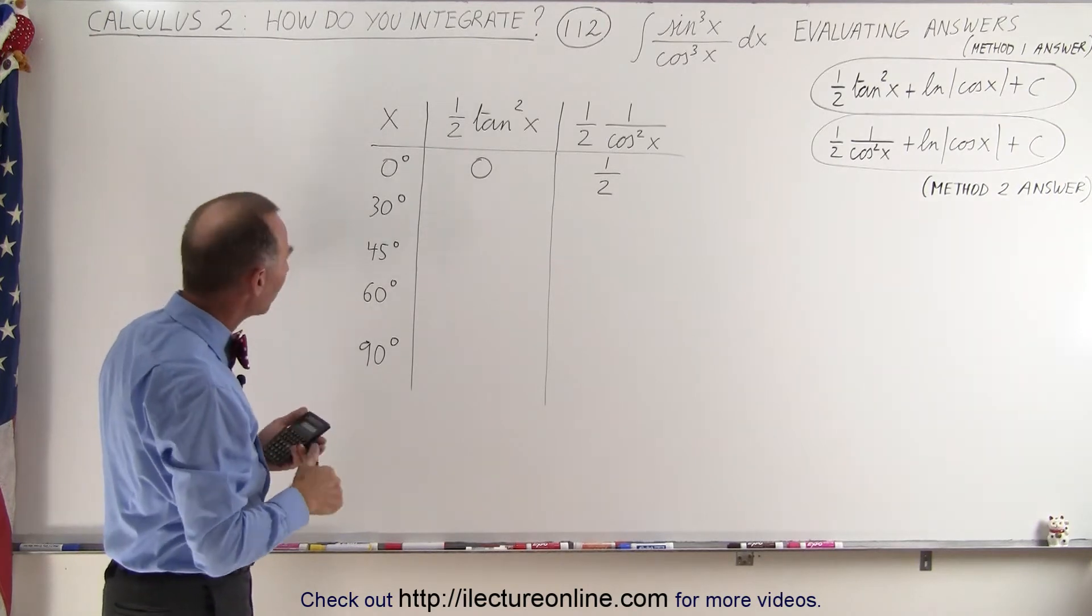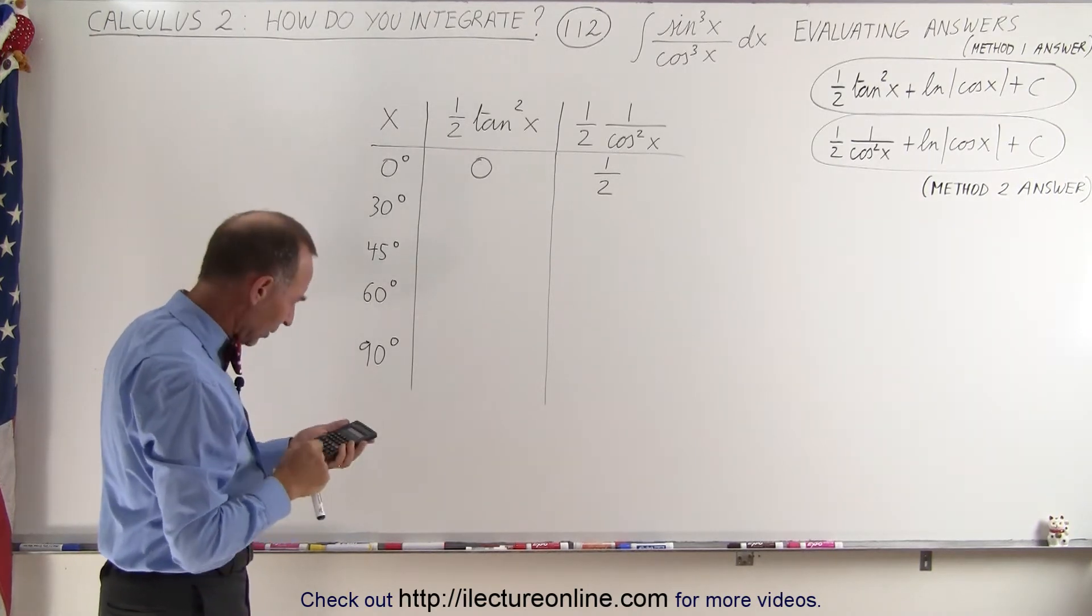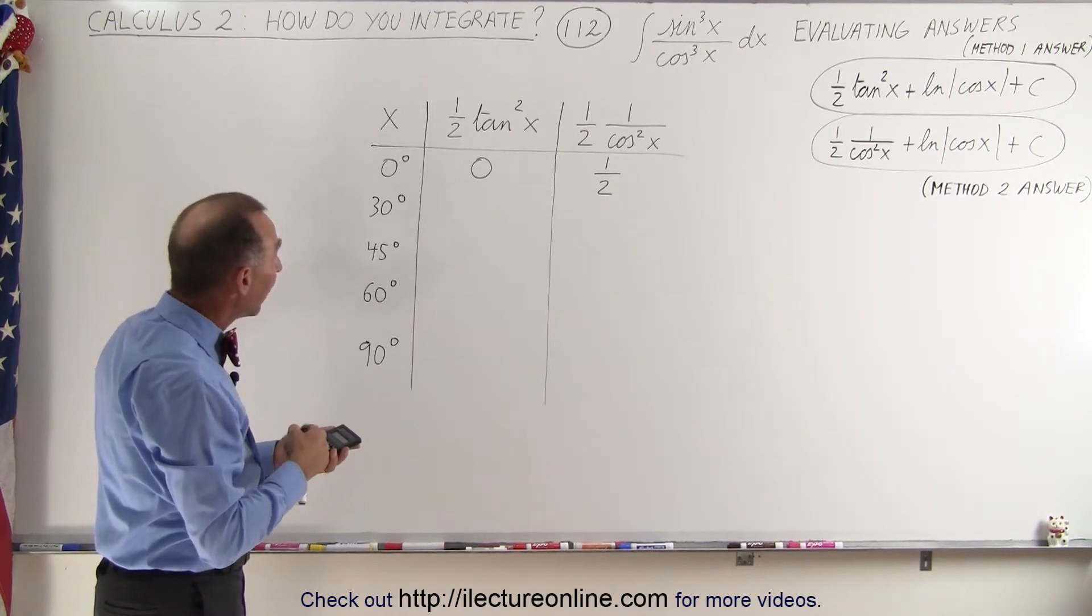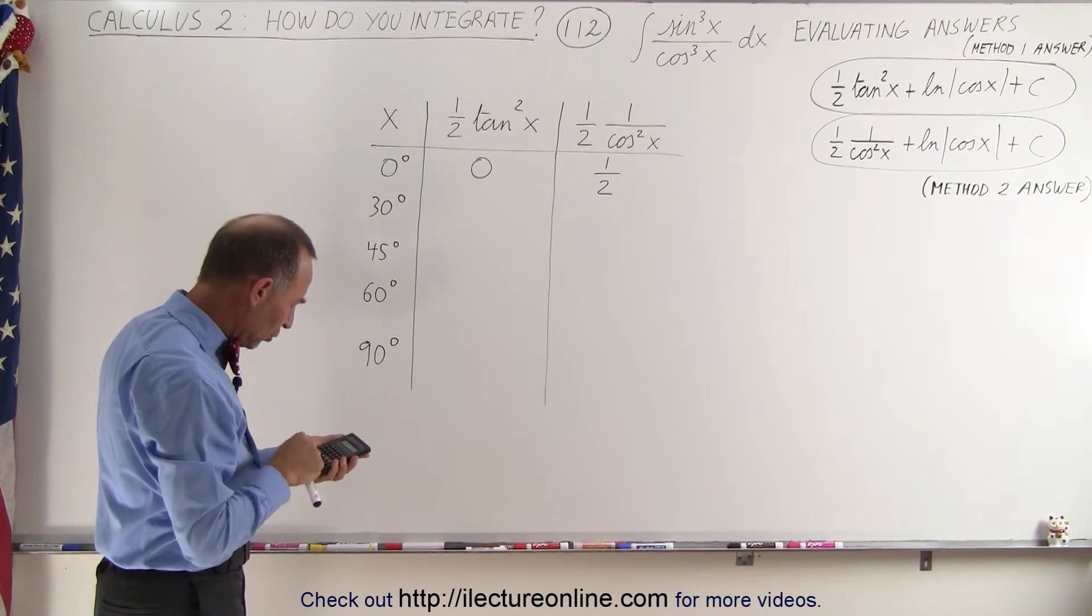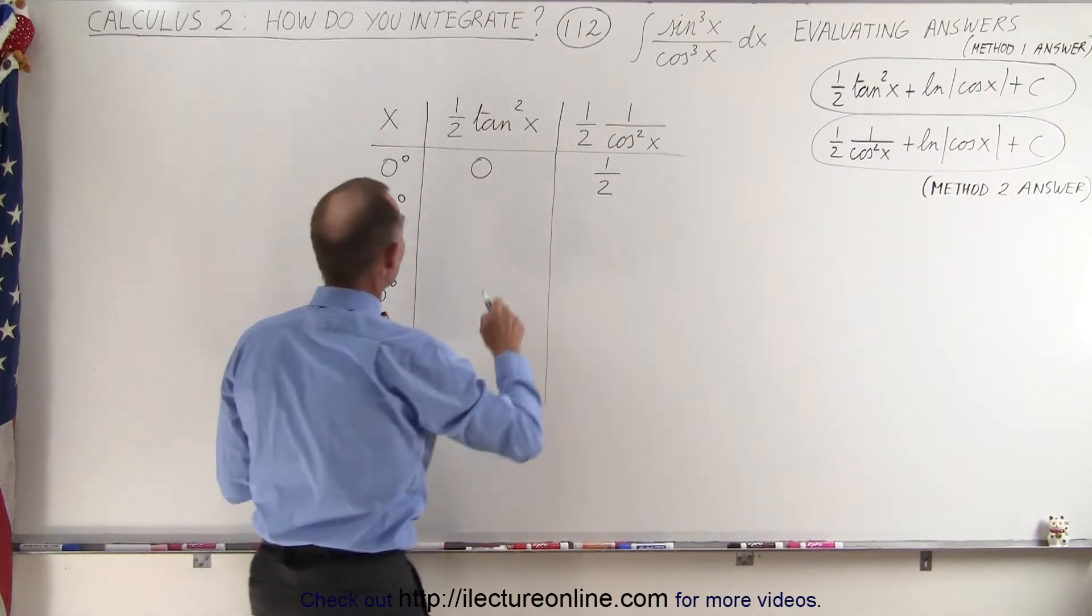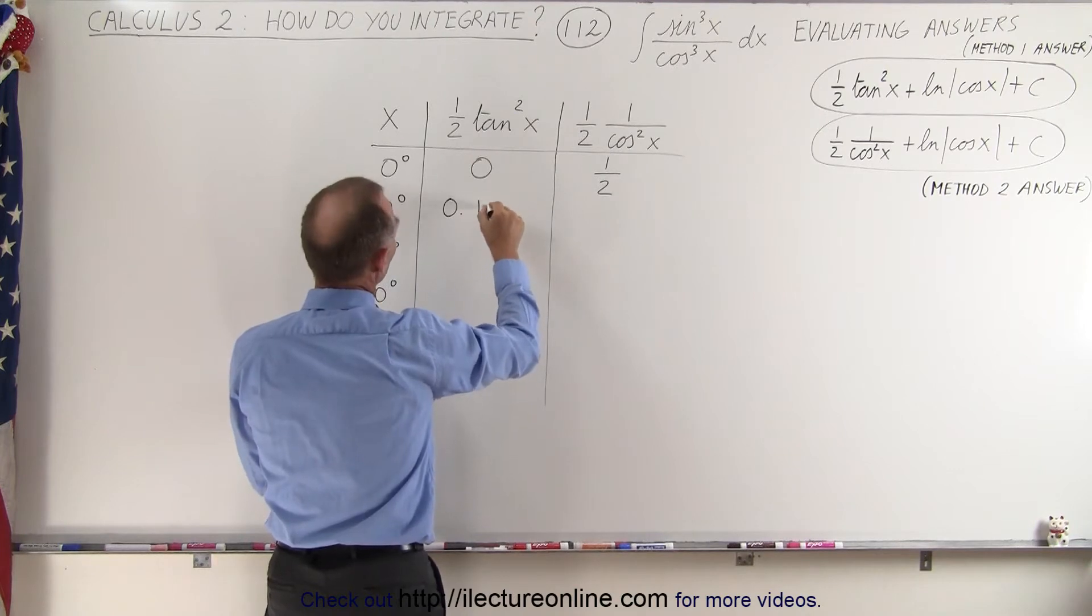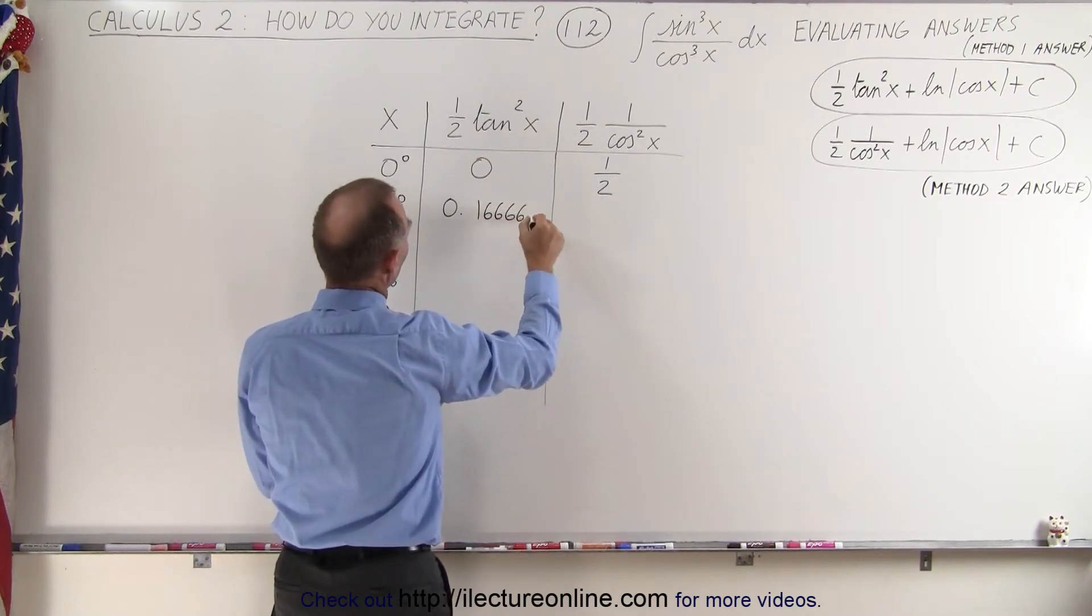Now what happens when we plug in 30 degrees for the angle? So we take 30, take the tangent of that, square that number, and then divide that by 2 and we get the following result: 0.16666 and so forth.